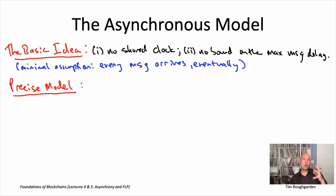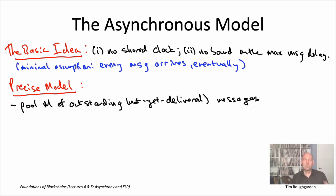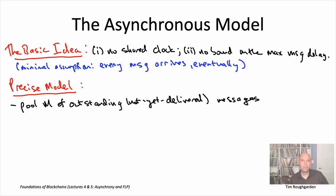At all times, there will be a message pool capital M. This is the set of messages that have been sent by a node but have not yet arrived at the intended recipient. So messages are sort of hanging out in the pool, idling out there in the ether. And now we want to talk about messages getting delivered one by one.